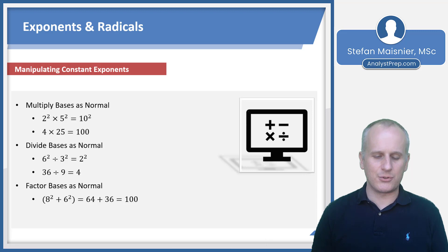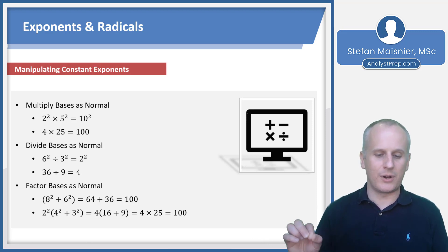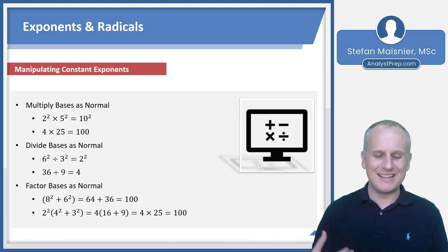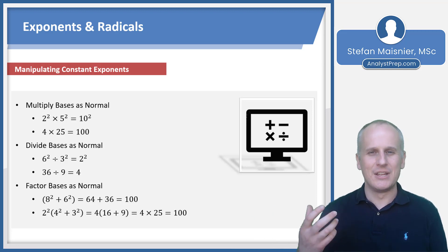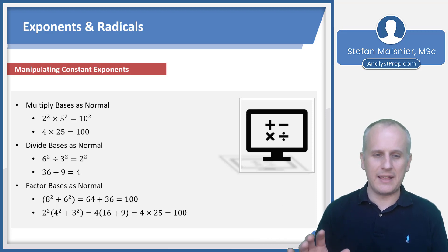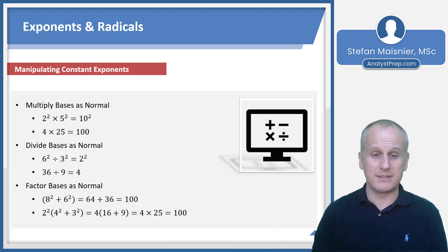You can even factor your bases as normal. If we've got eight squared plus six squared, that's 64 plus 36, which is 100. Doing it exponentially, we can factor two squared out of both eight squared and six squared: two squared times four squared becomes eight squared, and two squared times three squared becomes six squared. By distribution, four squared plus three squared is 16+9 = 25, and two squared times 25 is 100 — showing the flexibility and craft of exponential notation.